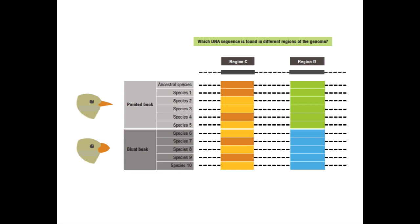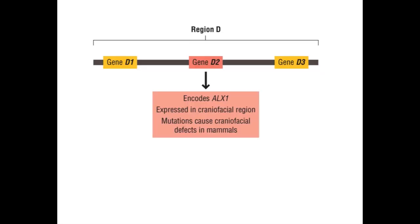This approach allowed the scientists to find previously unknown genes that influenced beak shape. As you can see in this figure, differences in DNA sequence in region C of the genome did not associate with beak shape, while differences in sequence in region D did. In this example, birds with pointed beaks had the DNA sequence represented by the green block, while those with blunt beaks had the DNA sequence represented by the blue block. Altogether, the team of biologists found 15 regions of the genome that fit this pattern of variation, and thus were good candidates for genes affecting beak shape.